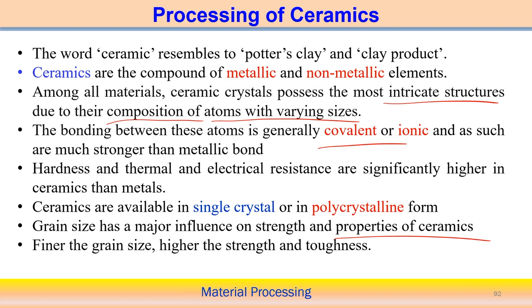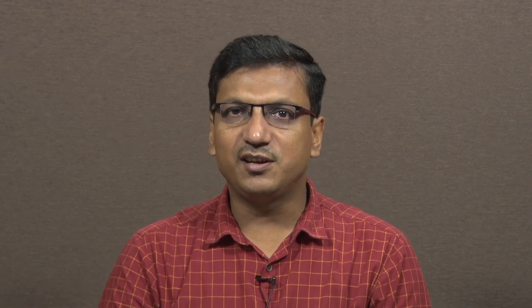Examples of ceramics: clay or any clay product can be considered a ceramic component. Ceramics are basically a combination of metallic and non-metallic elements. For example, aluminium is a metallic component, but when it produces aluminium oxide, we can consider aluminium oxide as a ceramic material. The properties of aluminium oxide compared to aluminium are completely different.